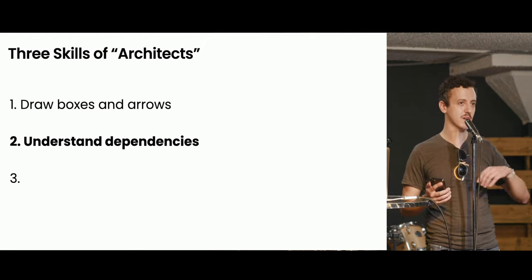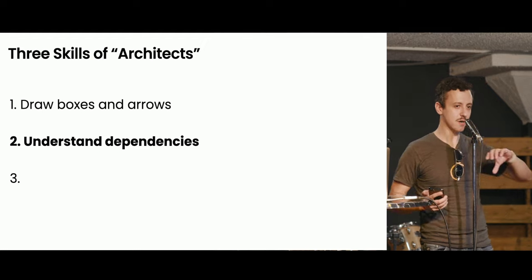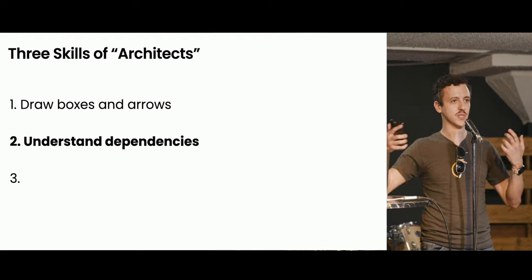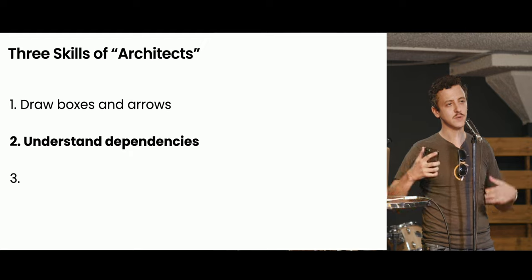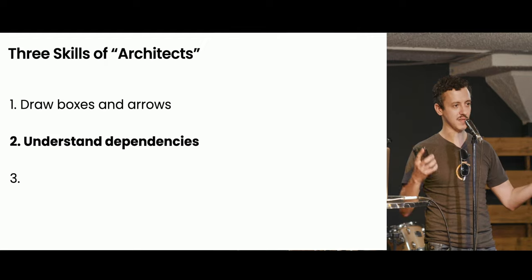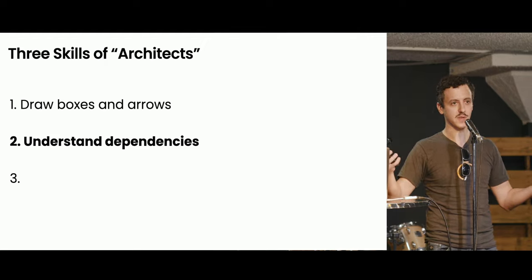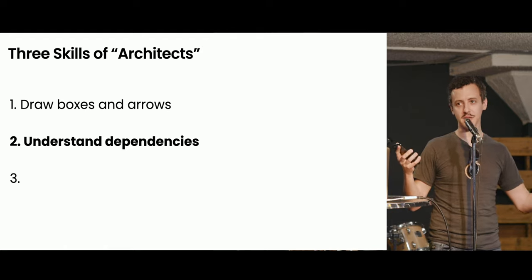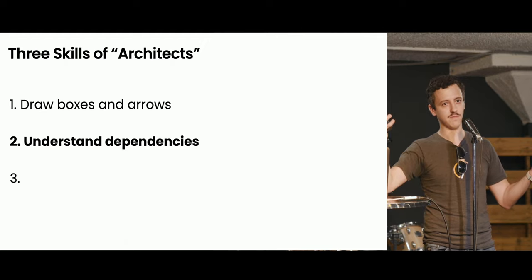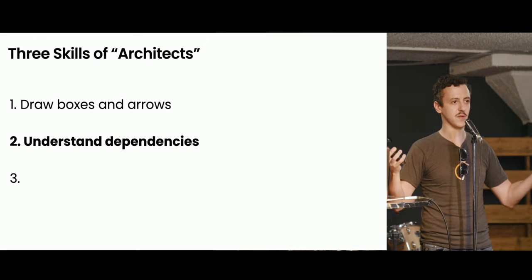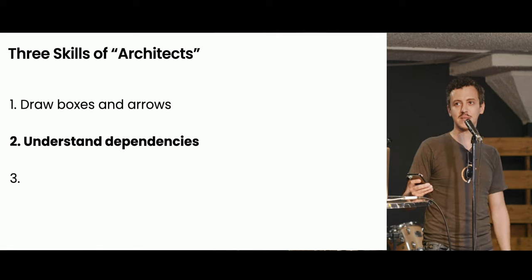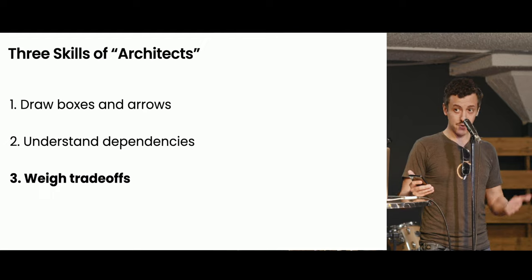We talk about dependency injection, dependency inversion containers — those things have complexities. But dependencies in software really just means: you have one chunk of code that knows something about another chunk of code. That something might be a class name, a method name, arguments — whatever. That knowledge creates a dependency, and if one piece of code changes it might force the other to change. That's basically all you need to know about dependencies to define architecture.